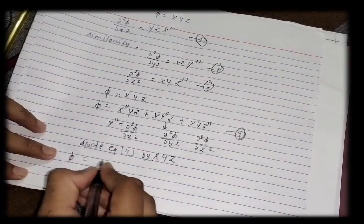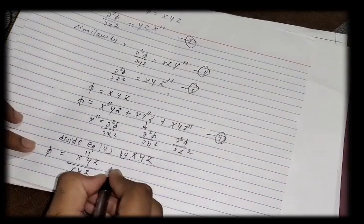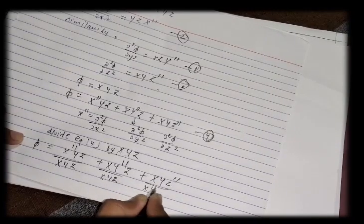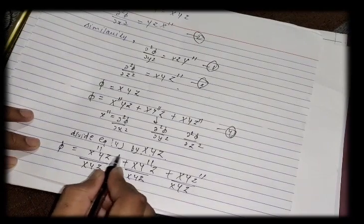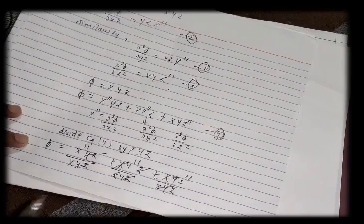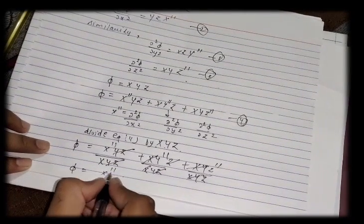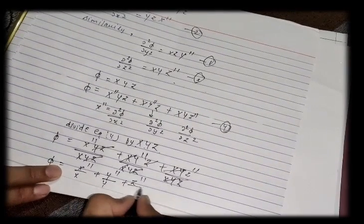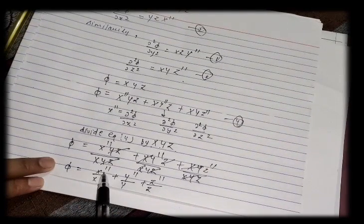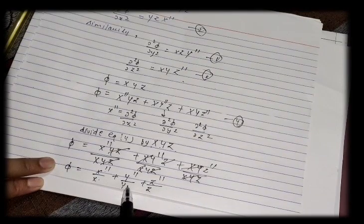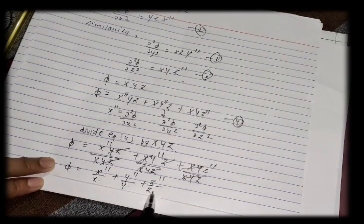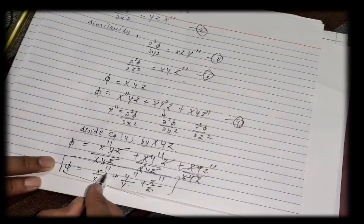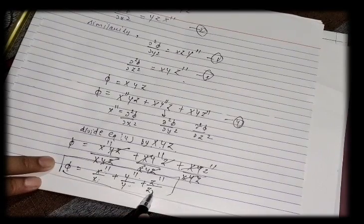After dividing by XYZ and cancelling terms, we get: X''/X + Y''/Y + Z''/Z = 0. Here, each term is a function of only one variable — X''/X is only a function of x, Y''/Y is only a function of y, and Z''/Z is only a function of z. This is the separation of variables result.